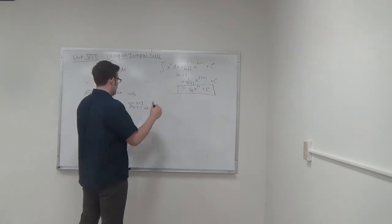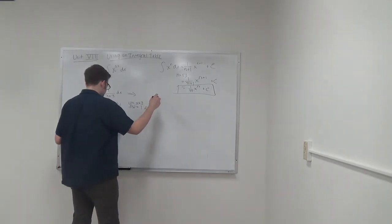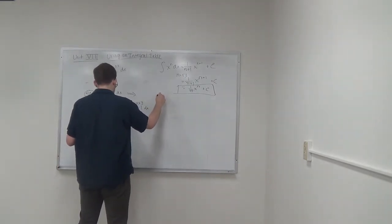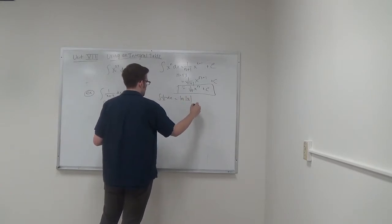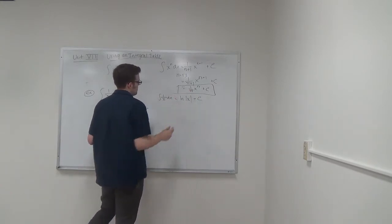So we have the integral table. The integral of 1 over x dx is equal to the natural log of the absolute value of x plus c.